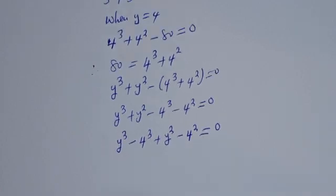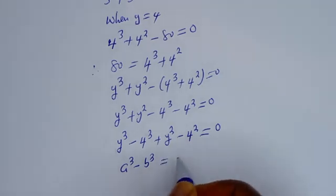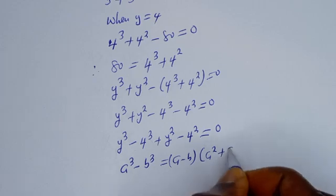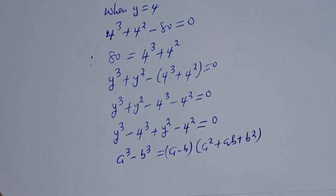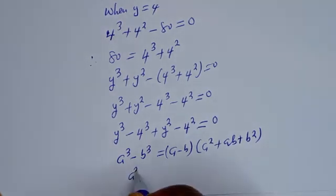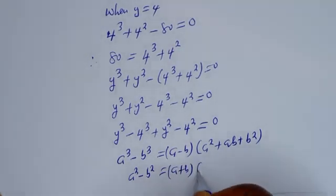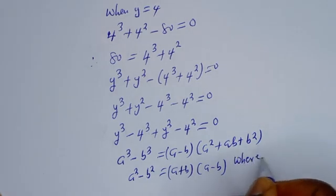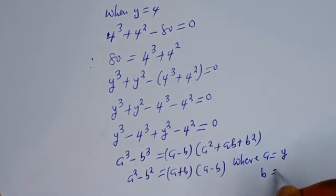Now take note: if you have a cubed minus b cubed, this is equal to (a − b)(a squared plus ab plus b squared). And if you have a squared minus b squared, this is equal to (a + b)(a − b), where a is equal to Y and b is equal to 4.